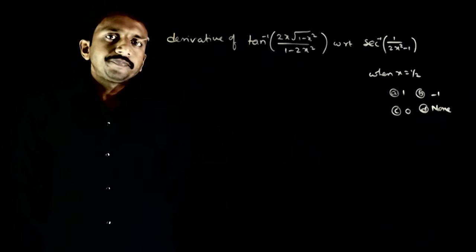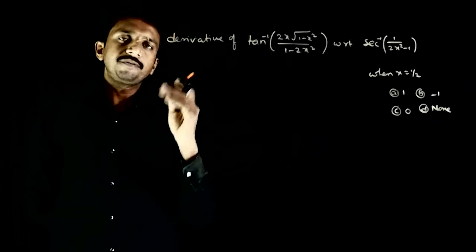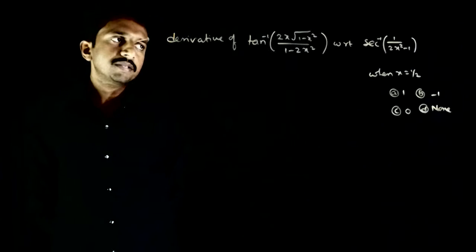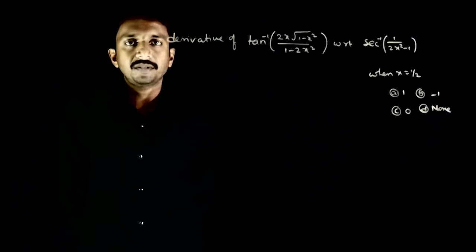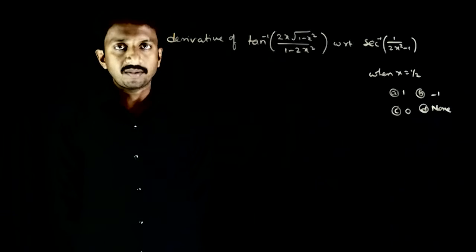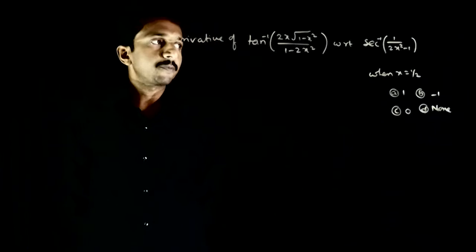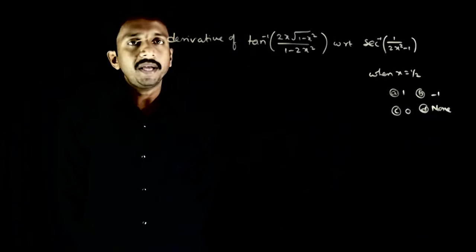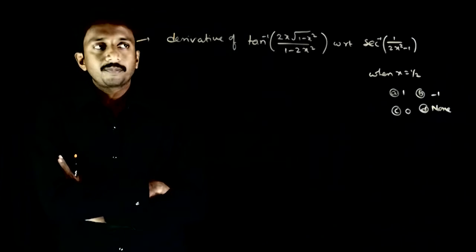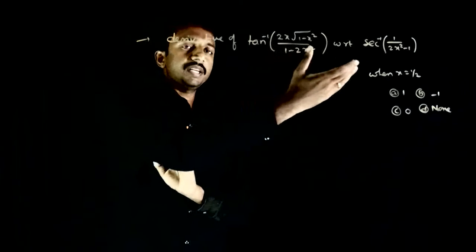Welcome students. This question asks you to find the derivative of tan inverse of 2x√(1-x²) divided by 1 minus 2x², with respect to secant inverse of 1 divided by 2x² minus 1. We want the derivative of this with respect to this.